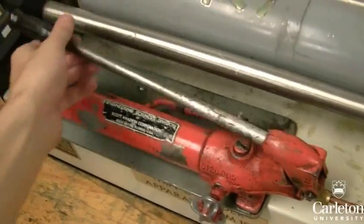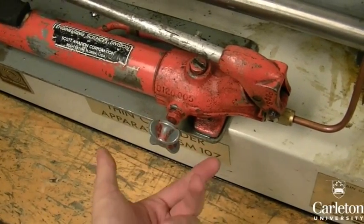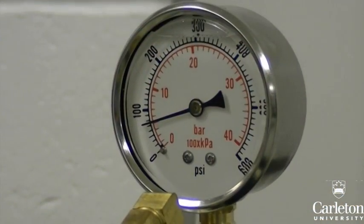This pump will allow us to apply pressure into the cylinder. The valve on the side will let us release that pressure when opened, and the gauge on the top will tell us the pressure inside the cylinder.